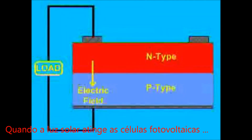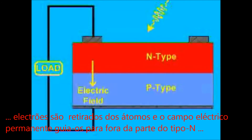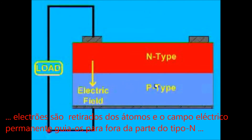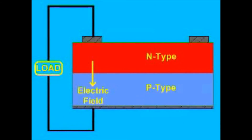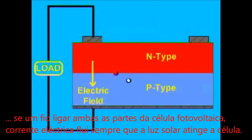When sunlight strikes the solar cells, electrons are ejected from the atoms and the permanent electric field in the junction steers them to the n-type side. If a wire is connecting both sides of the solar cell, electric current can flow whenever sunlight is striking the solar cell.